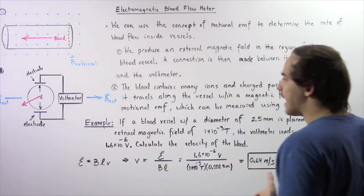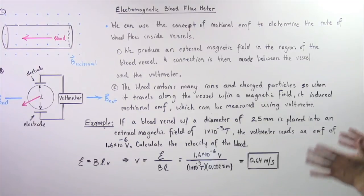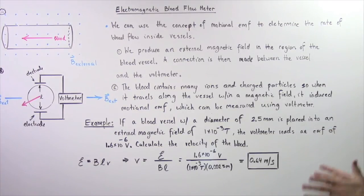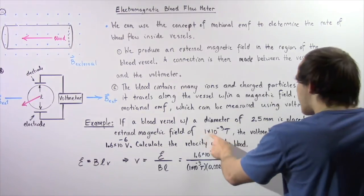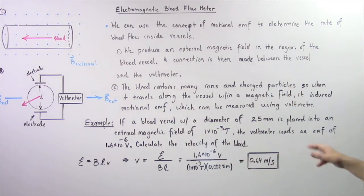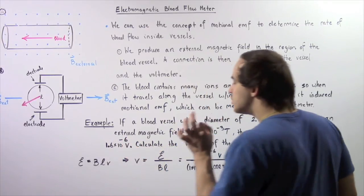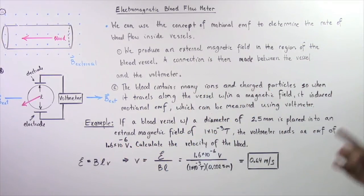Let's look at the following example. In a certain blood vessel with a diameter of 2.5 millimeters, we place it into an external magnetic field of 1 times 10 to the negative 3 teslas. The voltmeter reads an induced EMF of 1.6 times 10 to the negative 6 volts. We want to calculate the velocity of the blood.